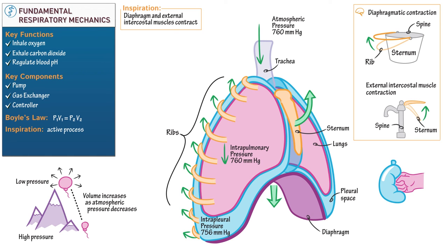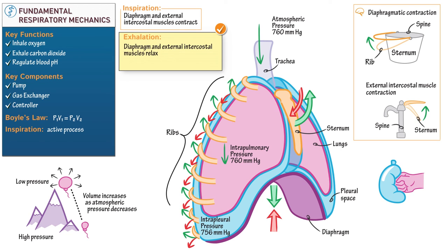Gas exchange occurs in the lungs and carbon dioxide must now be exhaled — we'll discuss the details of respiratory exchange elsewhere. During expiration, the diaphragm relaxes and the ribs move back to their resting positions, moving medially as in our bucket handle diagram. The external intercostal muscles relax and the sternum moves back to its resting position, moving inferiorly like our water pump handle. During expiration, the diaphragm and external intercostal muscles relax to decrease thoracic volume — the exact opposite of inspiration.